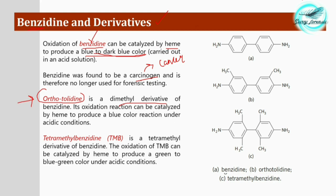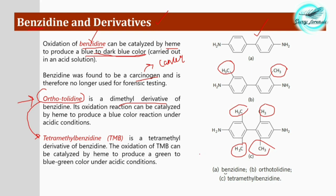Another component is orthotoluidine, which is the dimethyl derivative of benzidine. Orthotoluidine is also carcinogenic in nature, so it had to be replaced with tetramethylbenzidine (TMB), which is the four-methyl derivative. TMB is not carcinogenic and can be used safely for the identification of blood. The oxidation of TMB catalyzed by heme produces a green to blue-green color under acidic conditions.